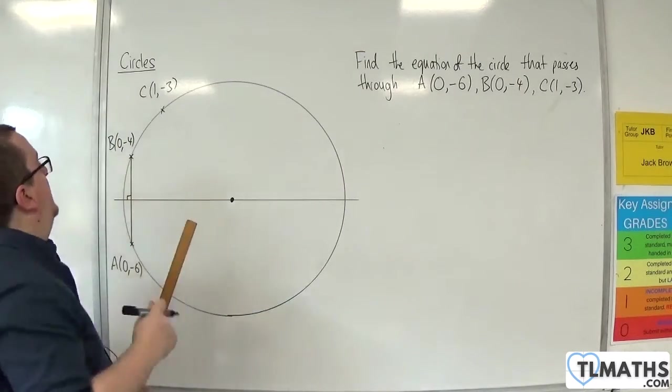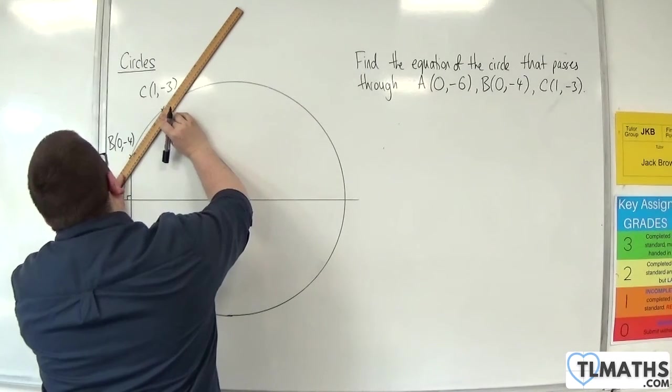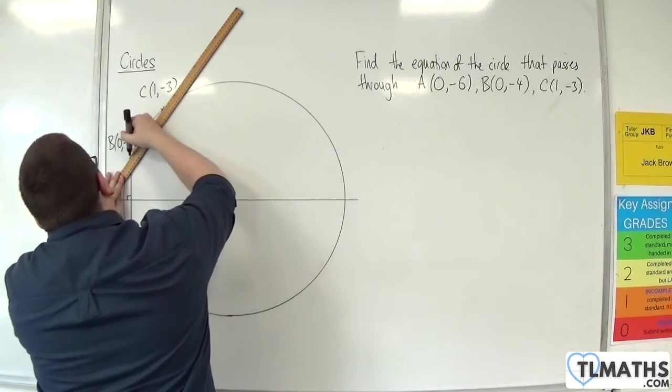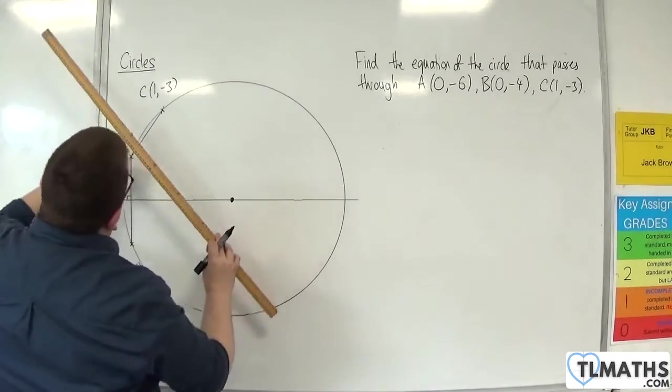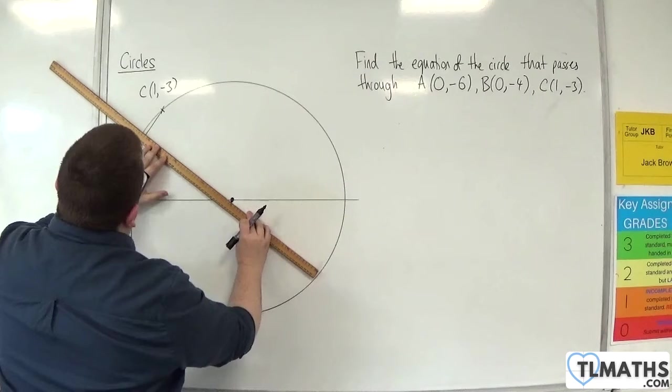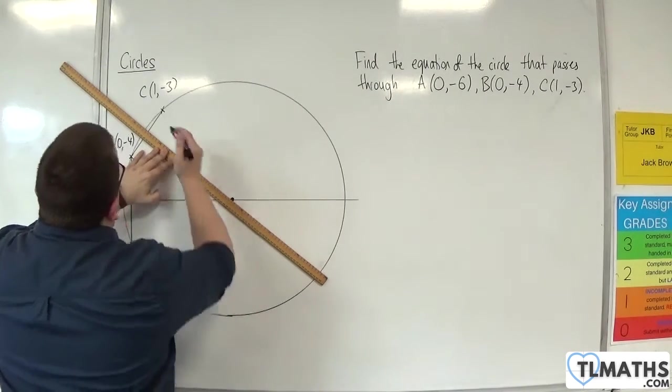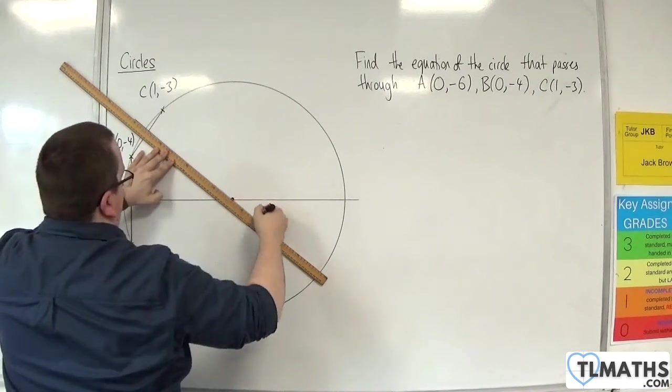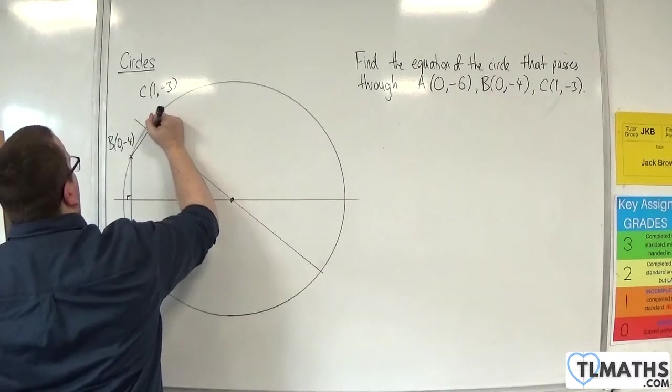And then I'm going to find the perpendicular bisector of B and C. Let's do B and C. It doesn't matter which pair I choose here. I'm just doing this because it's easier to visualize it. And then I find the midpoint, I find the perpendicular bisector and draw my line. So there's my perpendicular bisector.